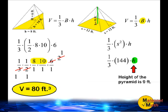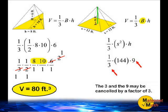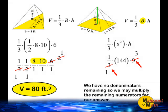Next we are going to substitute the height of this pyramid, or 9 feet, in for the h in our equation. Now at this point we must multiply all of our terms together. Notice that the 3 and the 9 may be cancelled out by a factor of 3, so we can turn the 9 into a 3 and the 3 into the number 1.